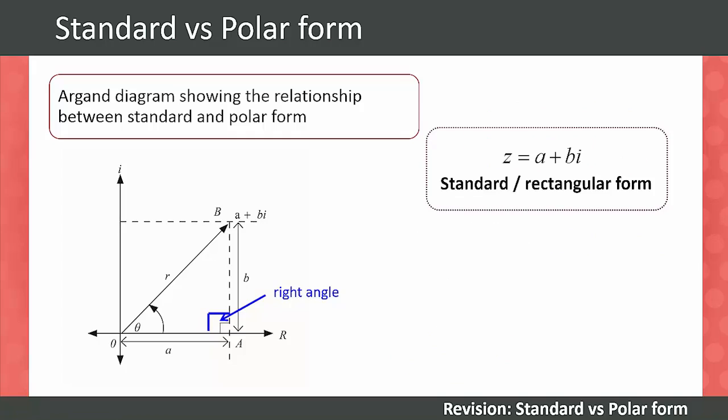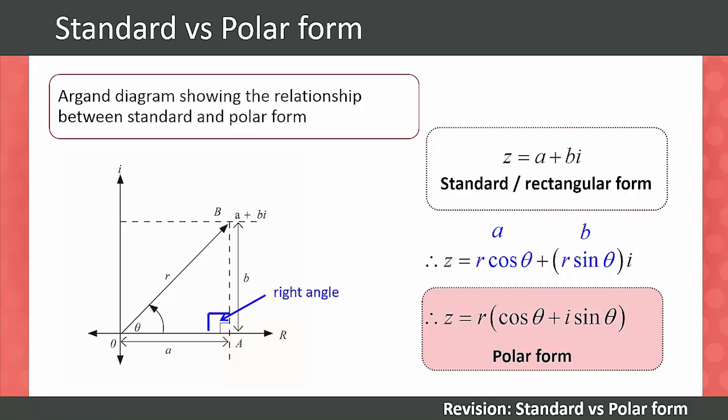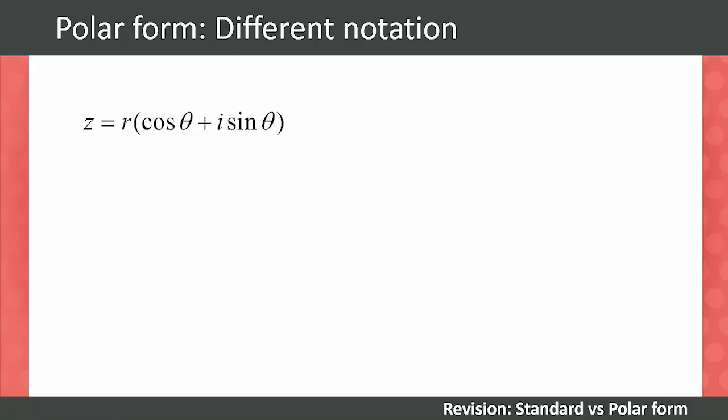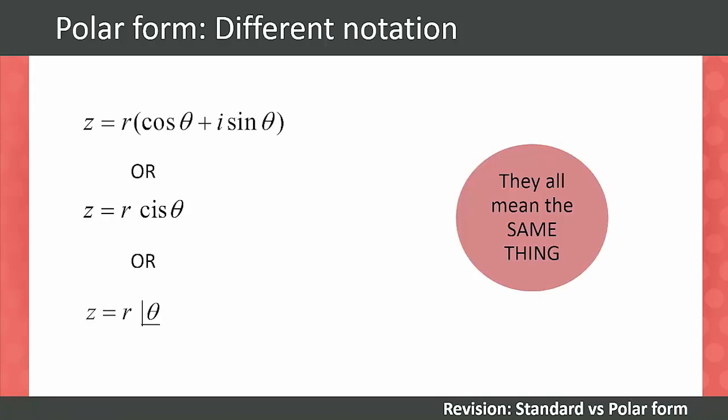Now that we have values for a and for b we can substitute these values into our equation for the rectangular form. We then factorize by taking out the r and we get z equals r times cos theta plus i sin theta. We call this the polar form of a complex number. It's important to remind your students that polar form can be written in different ways. They all mean the same thing.